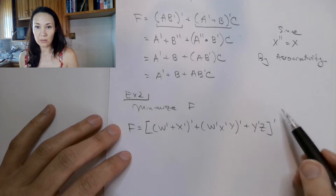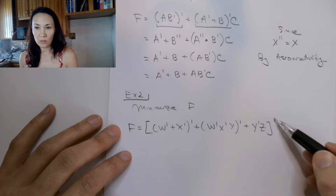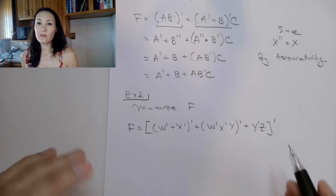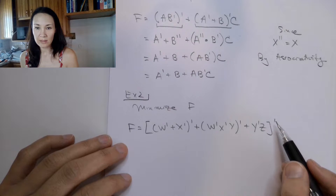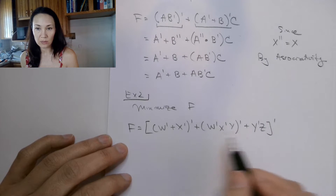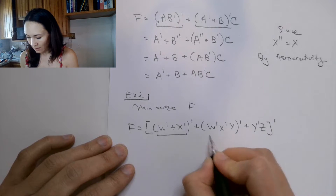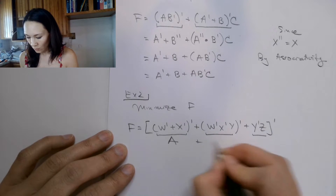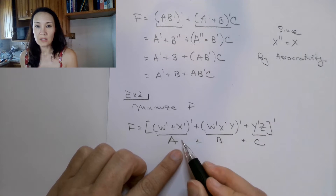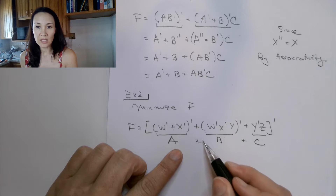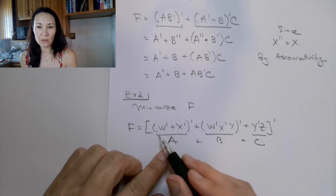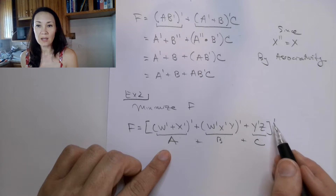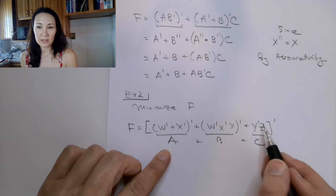The first thing we're going to do — since the entire function is negated with this complement — we're going to use De Morgan's to distribute this complement to all of these terms. We're not going to distribute to all the individual literals, but the terms separated by ORs are this one, this one, and this one. So we distribute the NOT to each of these individually and change the ORs into ANDs. We don't touch the stuff inside the parentheses yet; just distribute this NOT to the outside of the parentheses of each term.